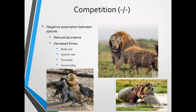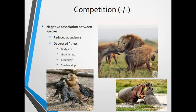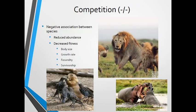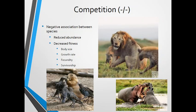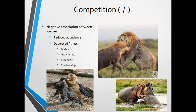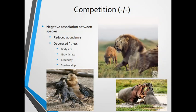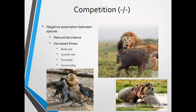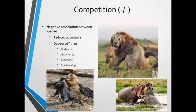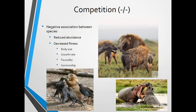So what is competition? We have a general idea — it's two things going after the same resource. The way we define this in community ecology is a negative association between two species. When the abundance of one increases, for it to be competition, the abundance of the other species needs to decrease. An increase in abundance of one decreases something in the other, whether that's fitness, population size, body size, or growth rates.